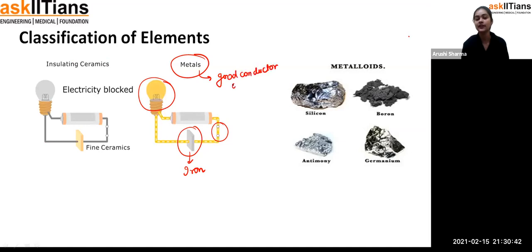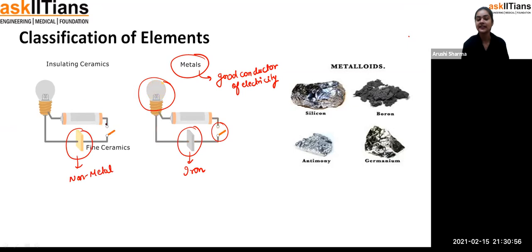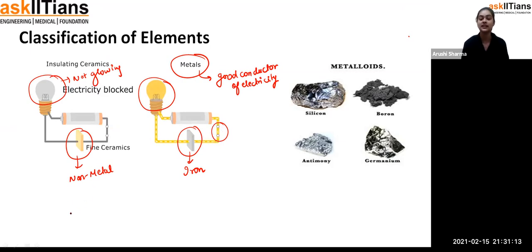For non-metals, you can see that ceramic is a type of non-metal. When you complete the circuit with ceramic, the bulb does not glow — electricity is blocked. The current passing through it will not be allowed to pass, so the bulb cannot glow. Non-metals are not good conductors of electricity; we call them insulators.